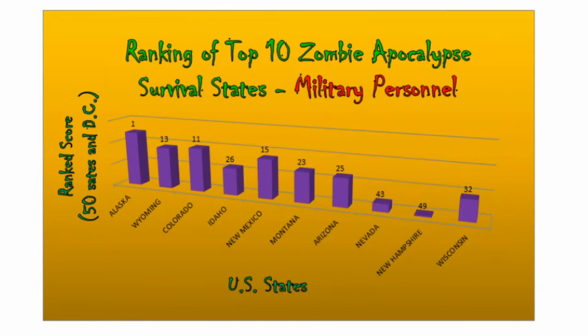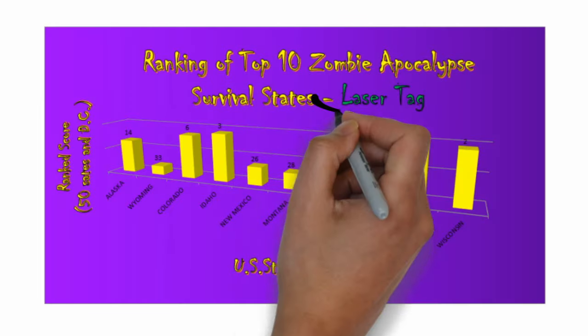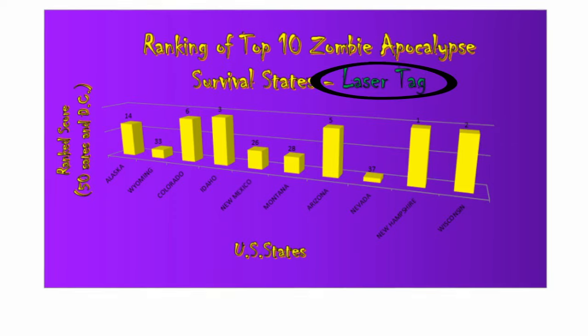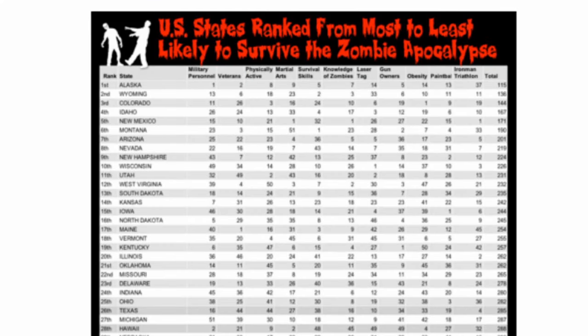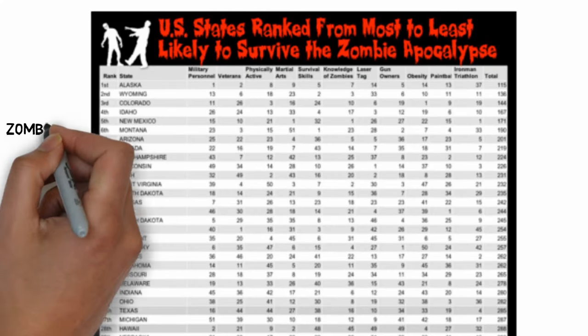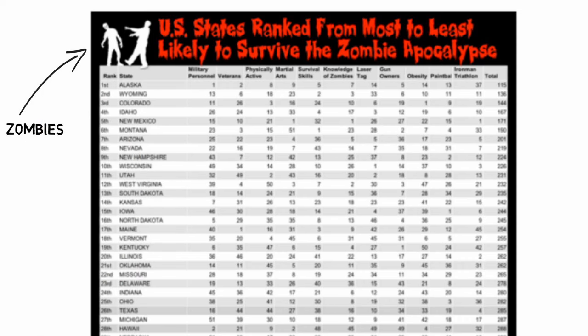Among other categories, Alaska actually comes out on top because of its ranking in military personnel, gun ownership, and its number of laser tag facilities. These graphs help display the data in the chart about the zombie apocalypse and why Alaska comes out on top.